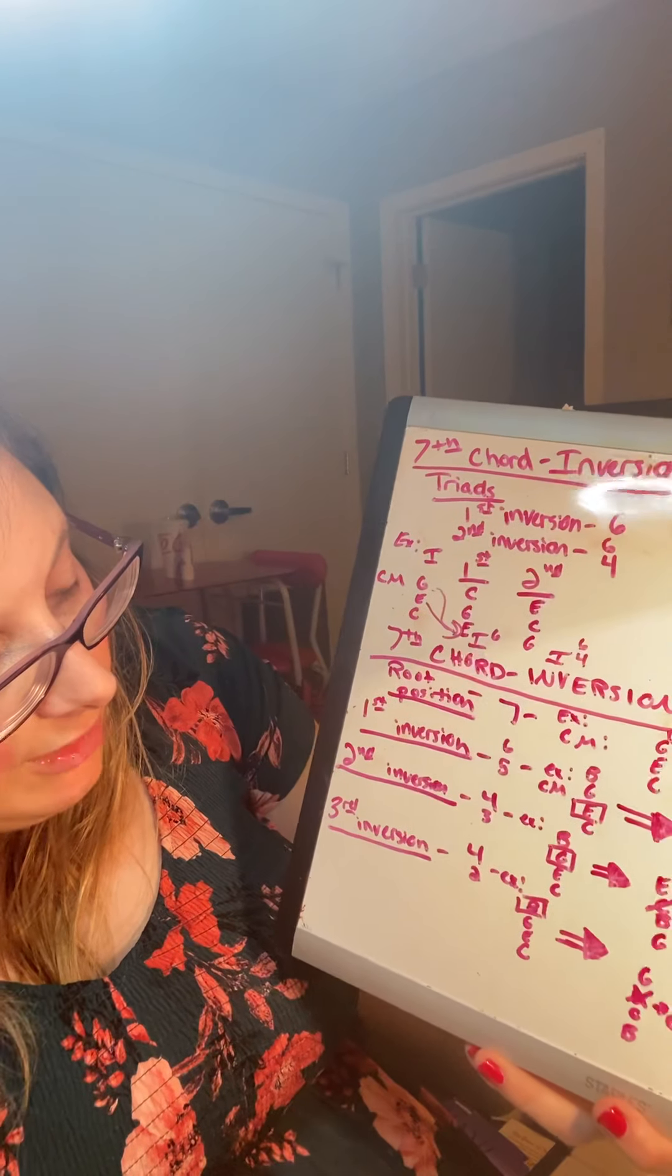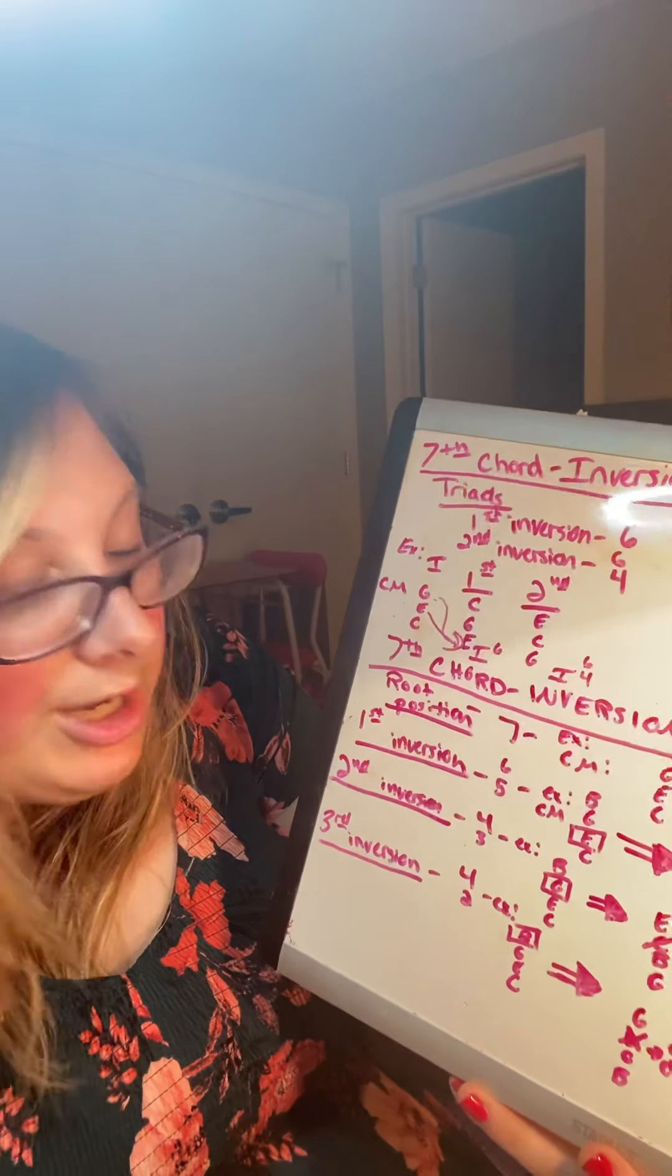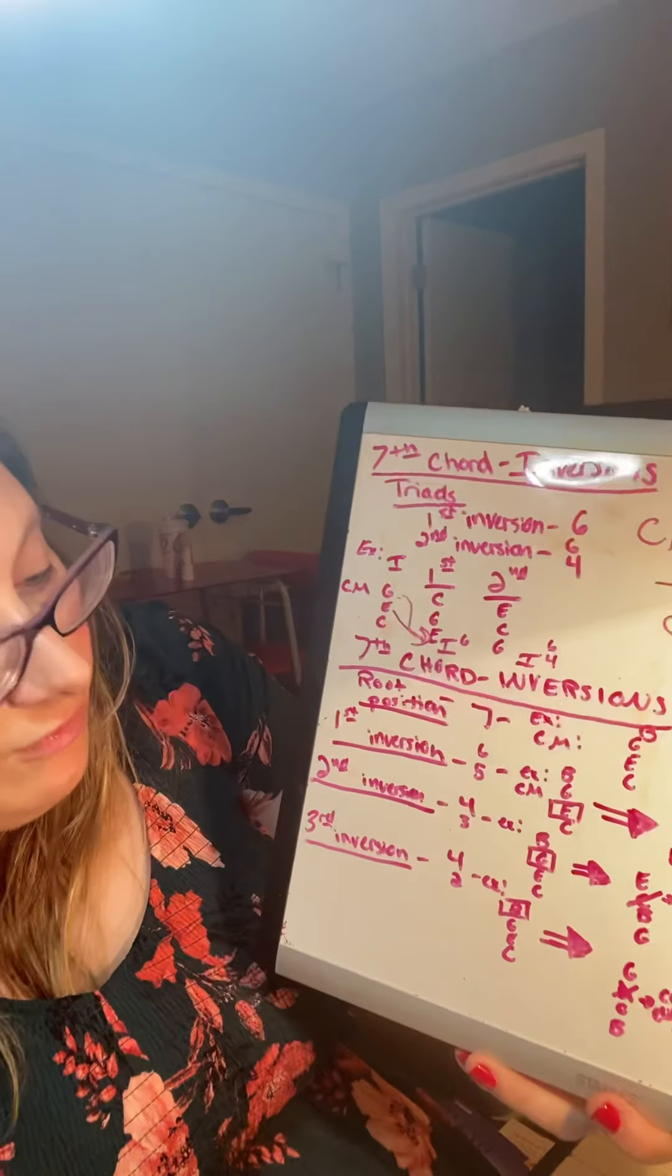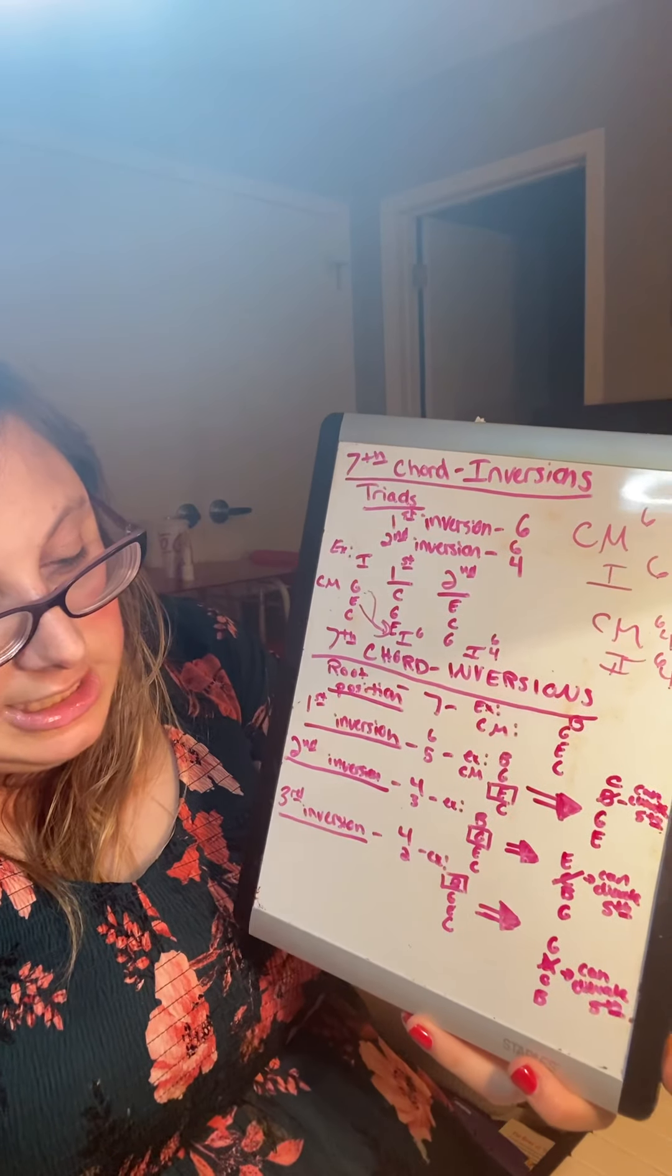Then for a second inversion, it would be four, three, put above it. So you'd write C major four, three, or you'd write the Roman numeral one, four, three. And for this one, obviously our C major root position was C, E, G, B.